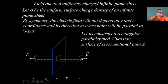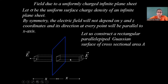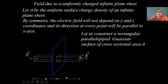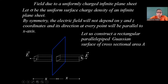Surface 1 and surface 2 contribute to the flux because E and the area vector are parallel — the angle between them is 0. The other surfaces do not contribute to the flux. So both these faces contribute, and their fluxes will add up together.